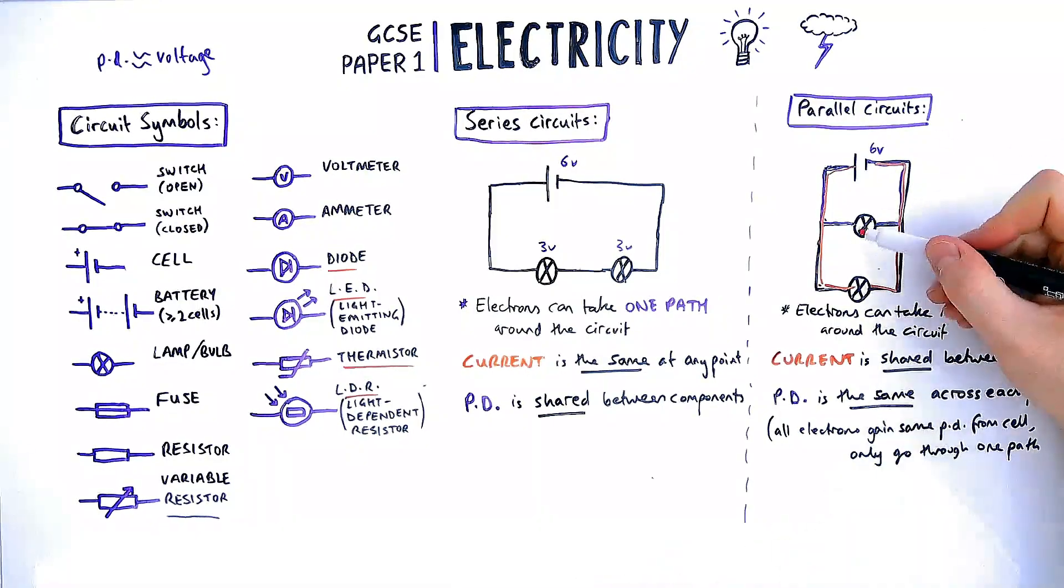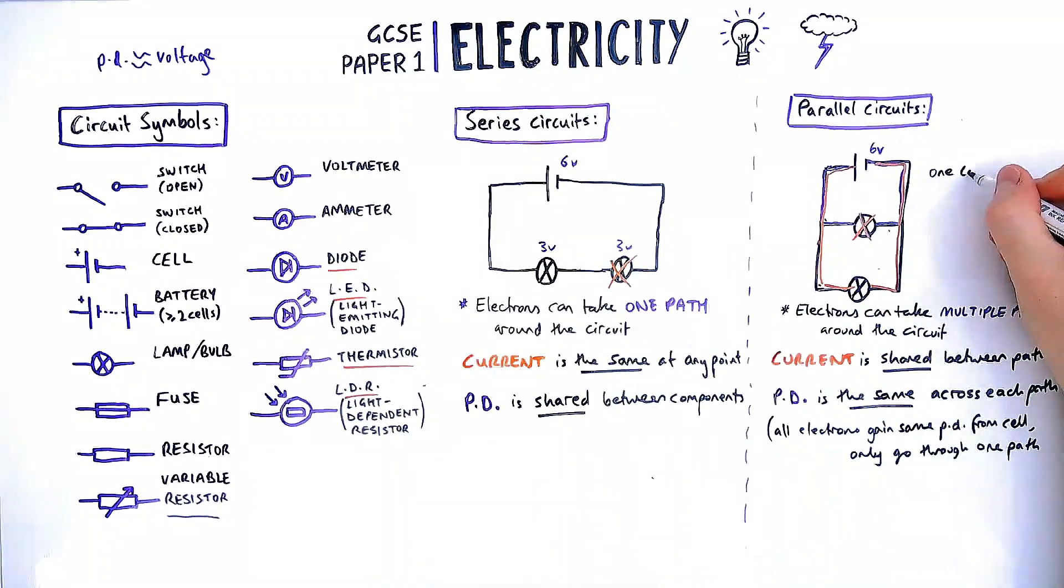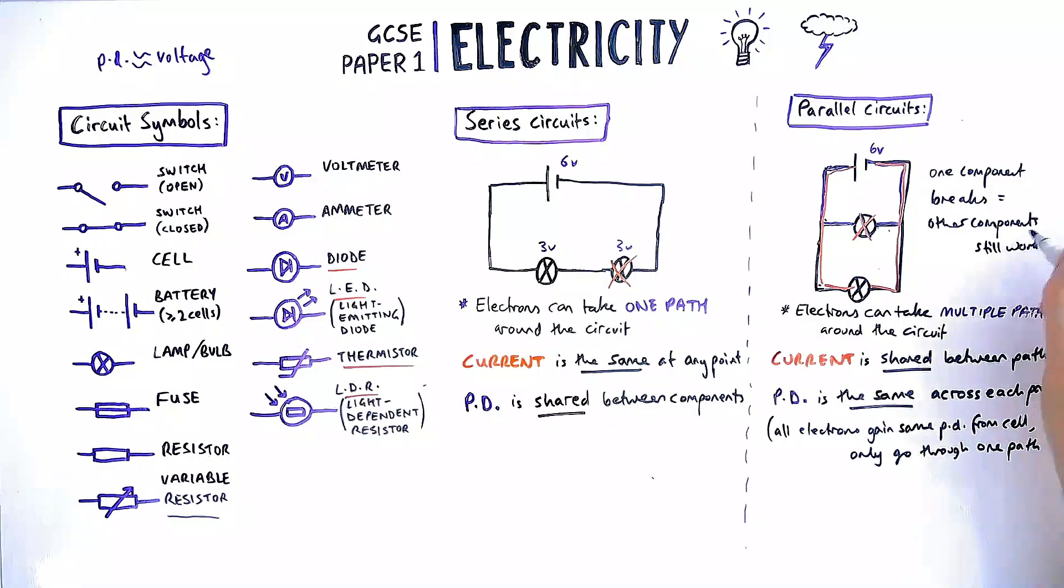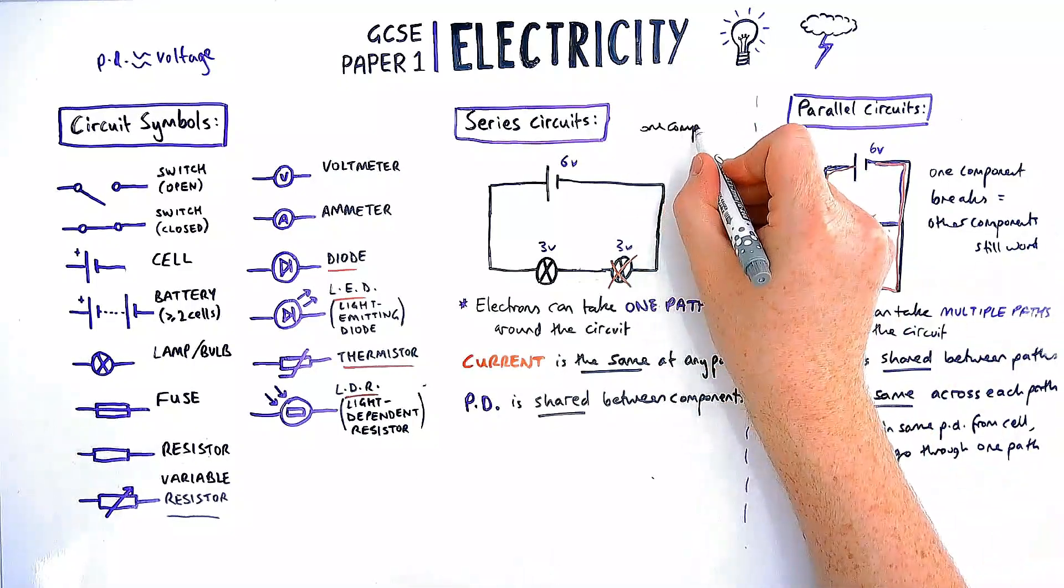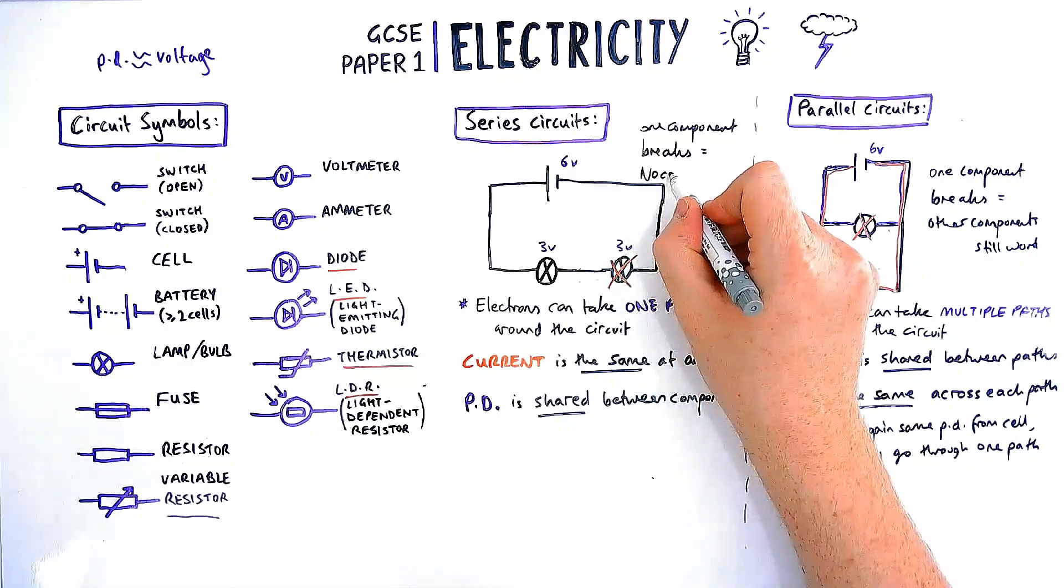There's one big advantage of parallel circuits over series circuits. In a parallel circuit, if one of the bulbs breaks, you've got another bulb that can still be lit because the electrons can still reach that bulb. If one component breaks in a series circuit, because they're all in series, no current flows and the circuit is broken.